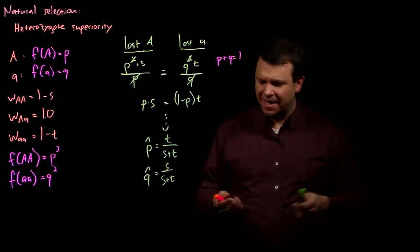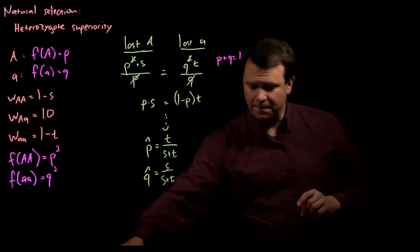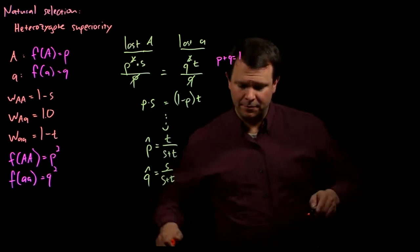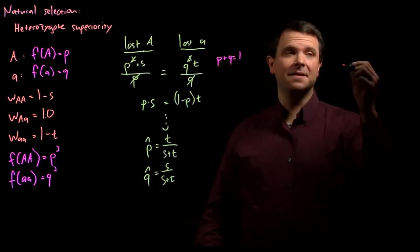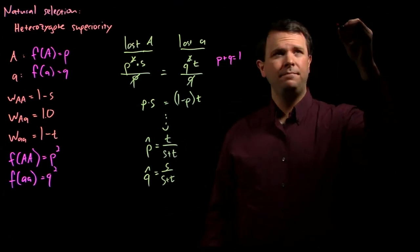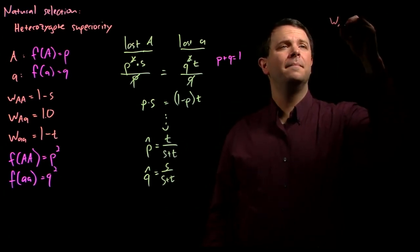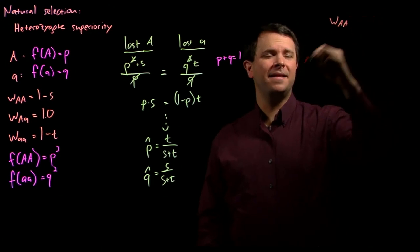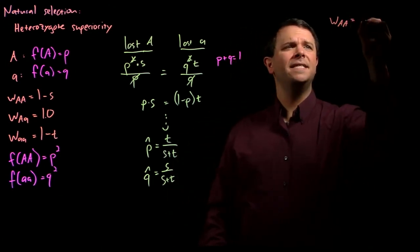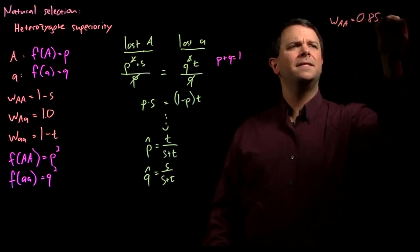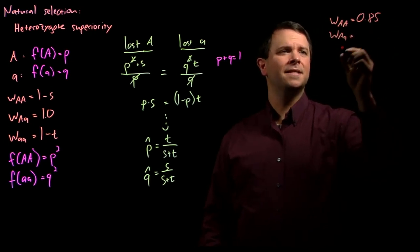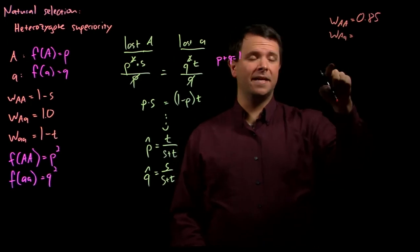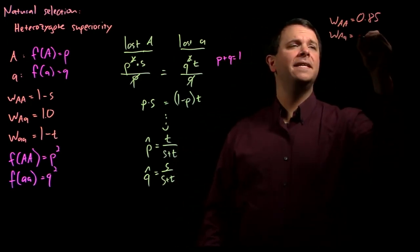What does this look like in the real world? Well, in the malaria example, we estimate that the homozygous fitness is about 0.85. Remember, the heterozygous fitness is 1.